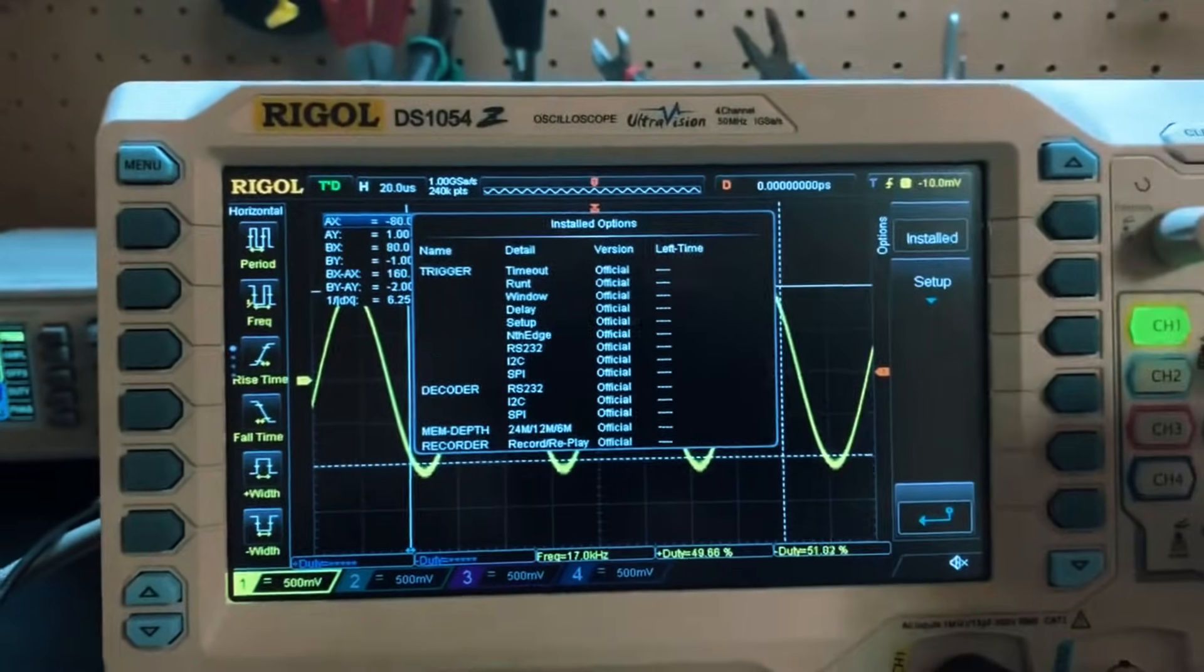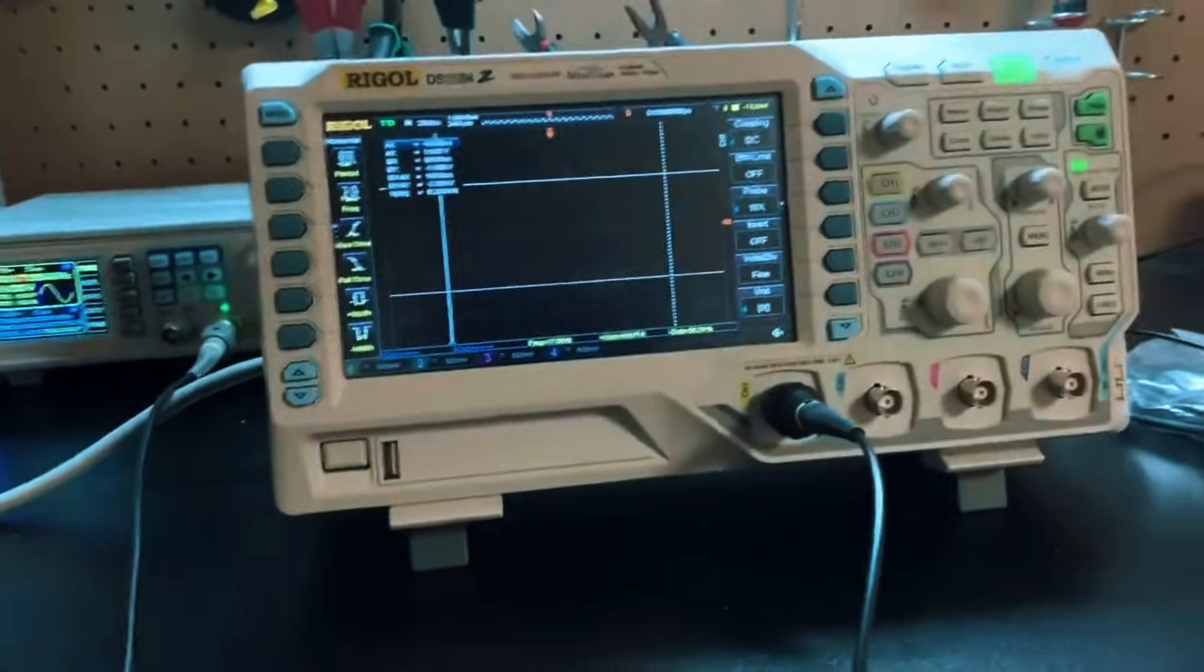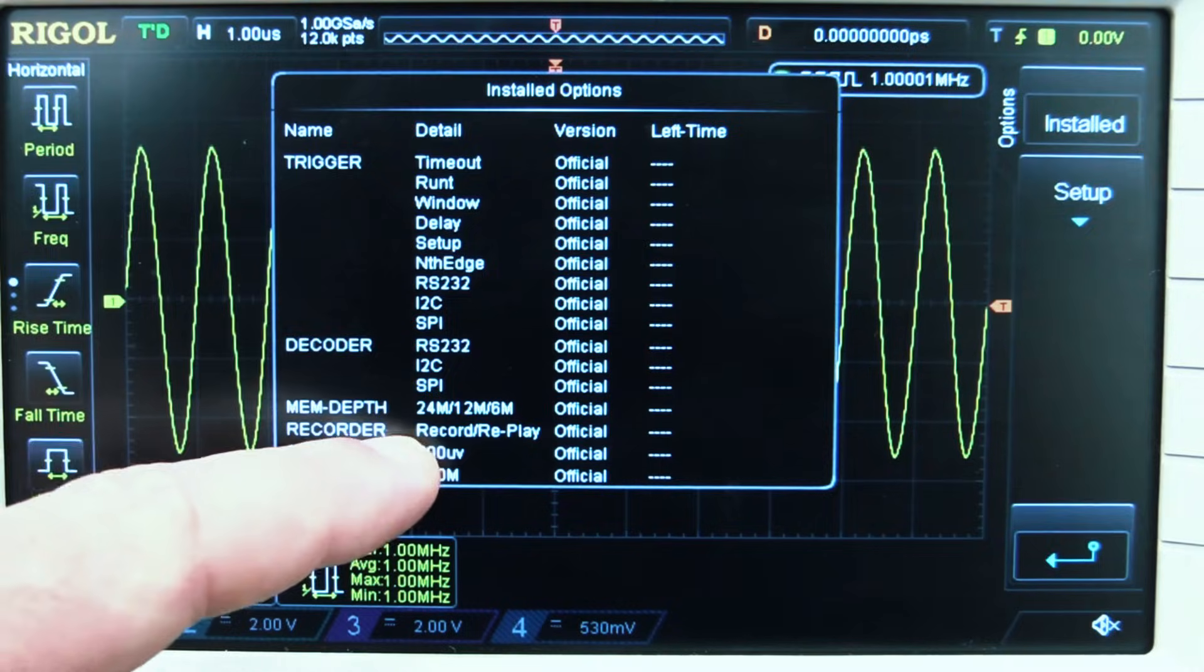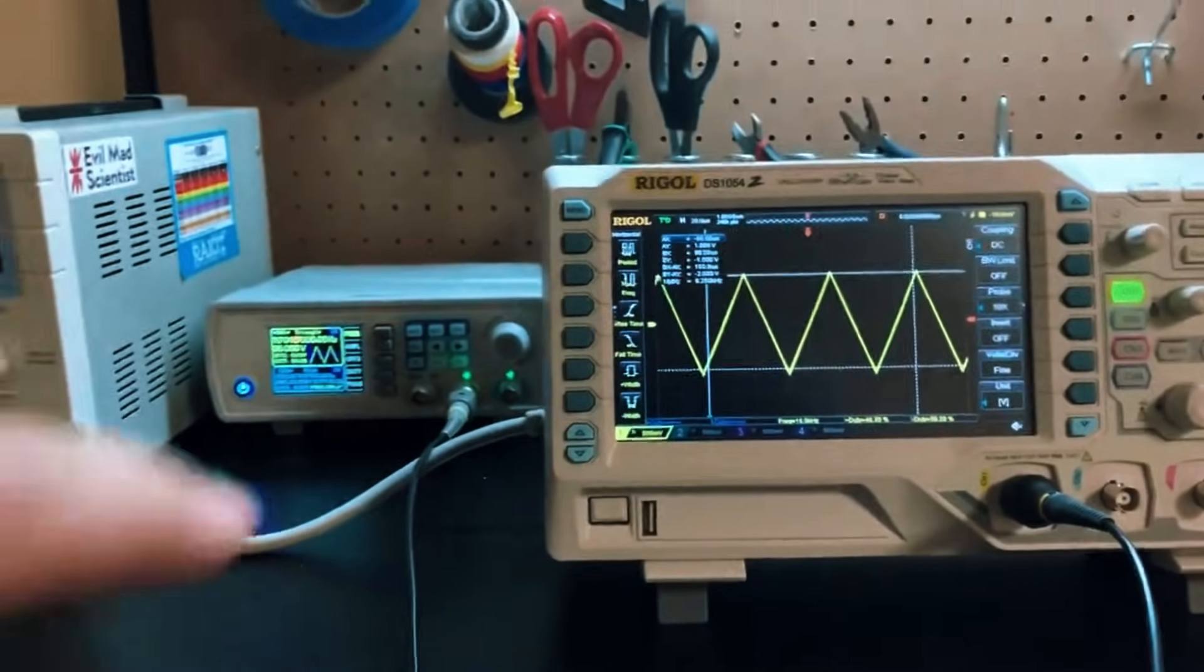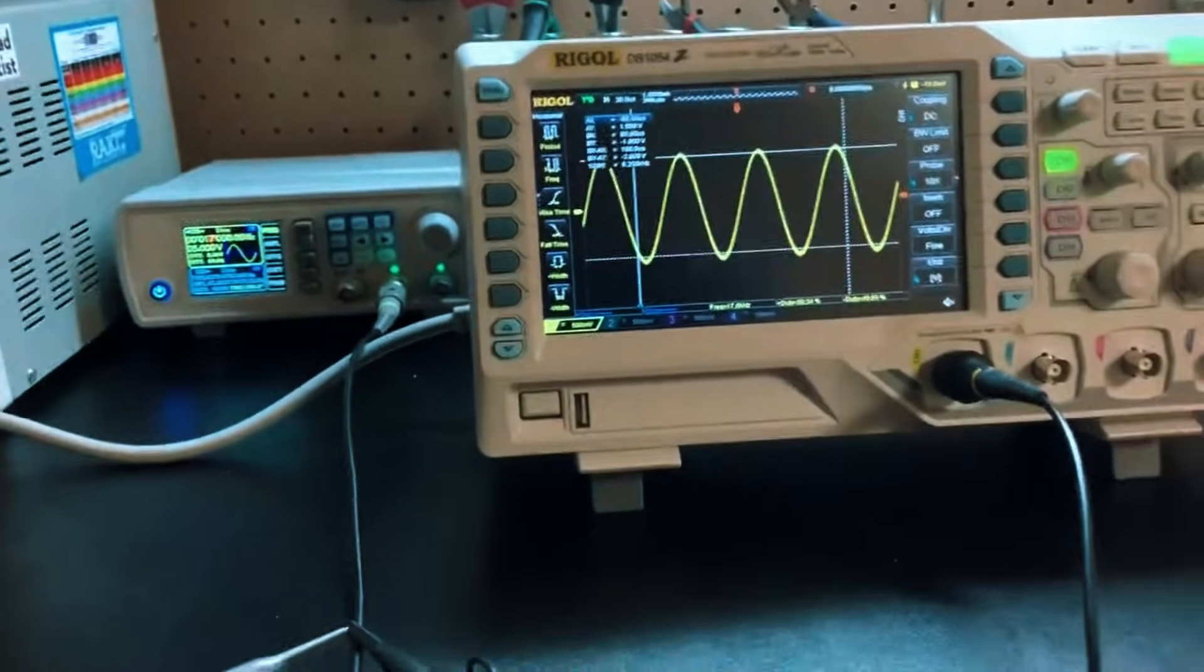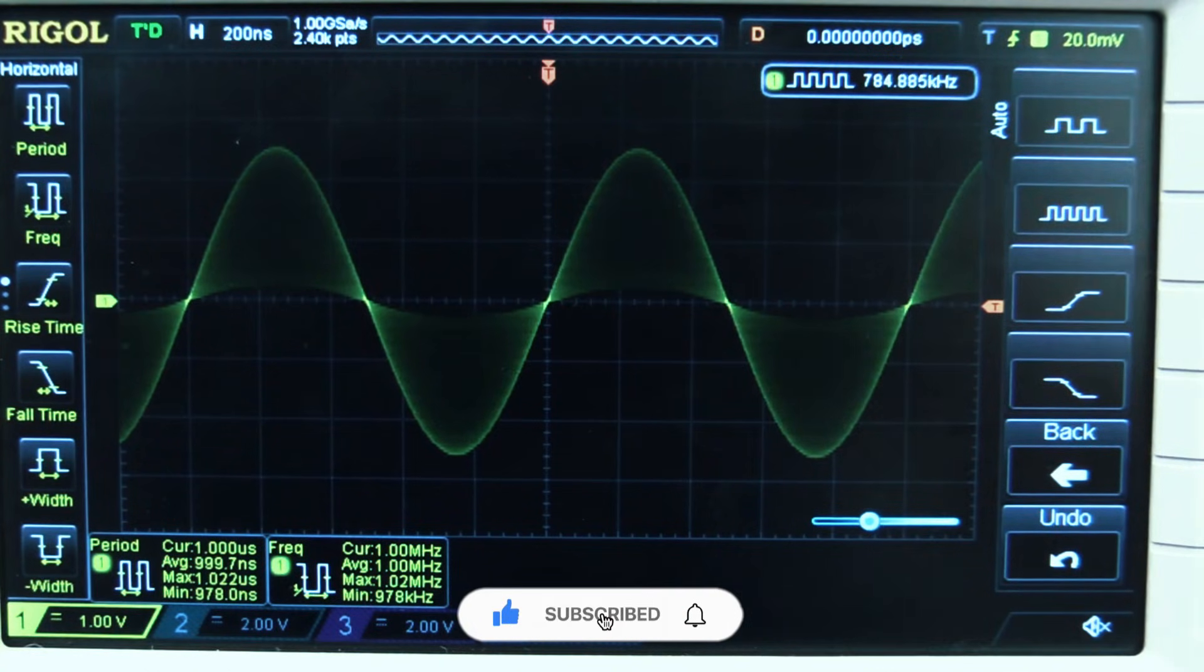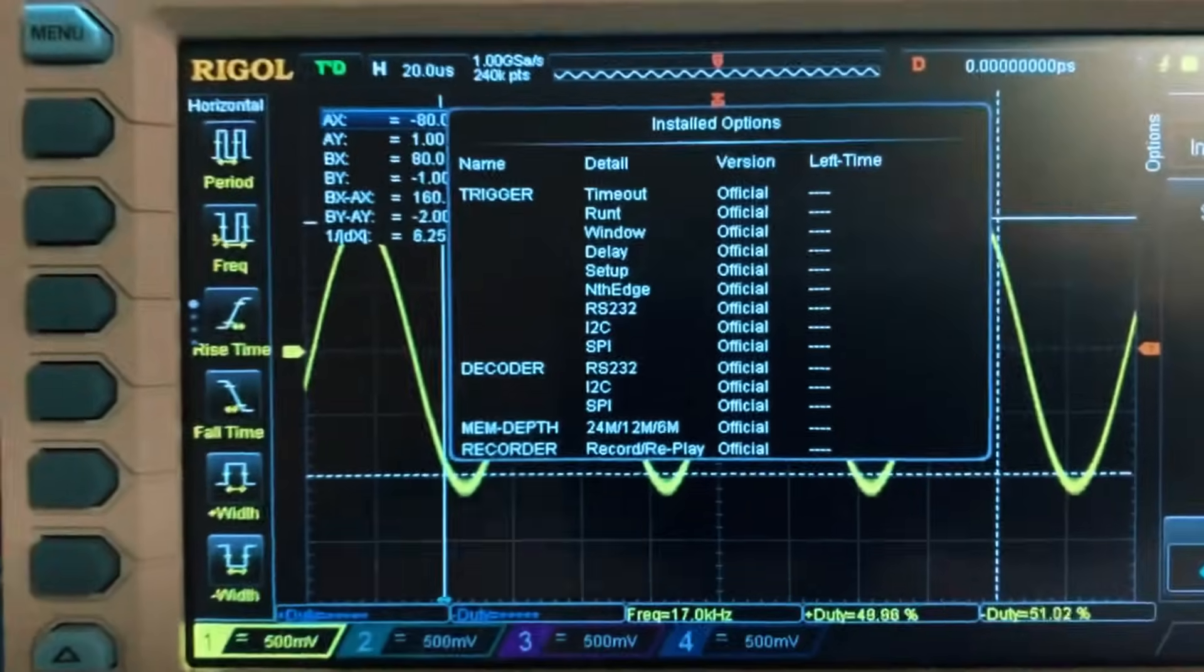One of the best parts? Upgradable firmware. Instead of becoming outdated in a few years, the DS1054Z remains relevant and adaptable, ensuring long-term usability, a rare feature in budget-friendly oscilloscopes. Let's get real. The DS1054Z is an absolute beast in its class. The UltraVision technology combined with deep memory storage allows users to zoom into waveforms with crazy precision, making detailed signal analysis easier than ever.